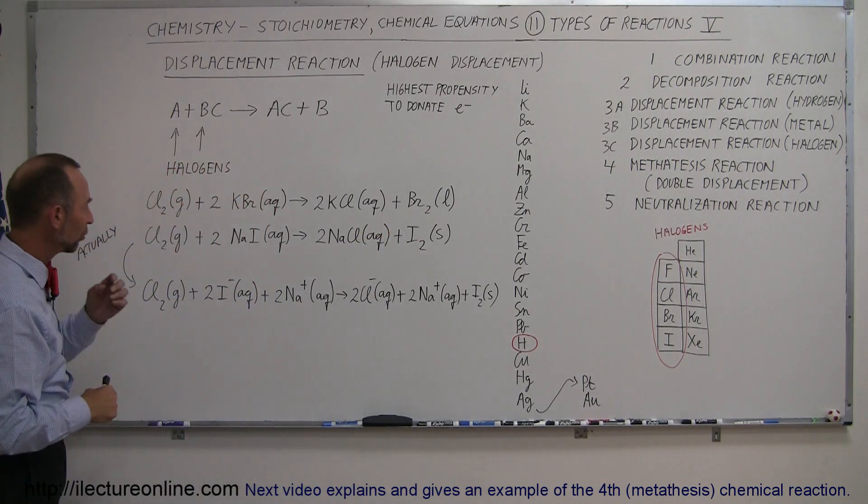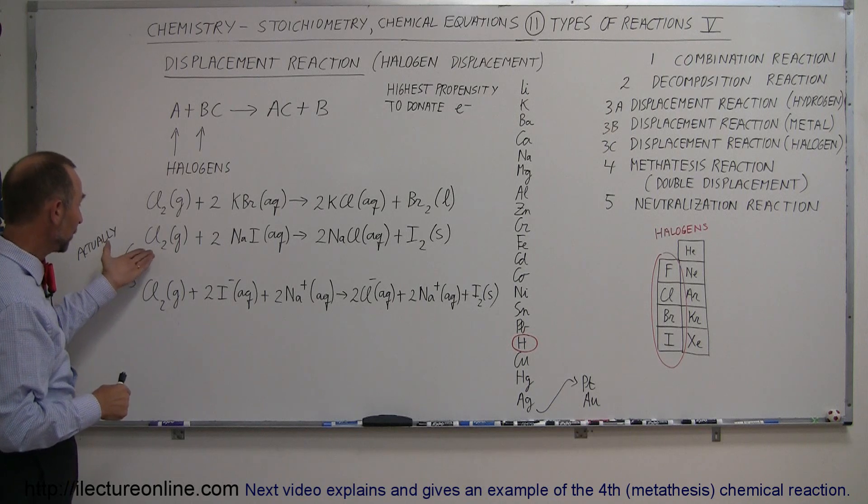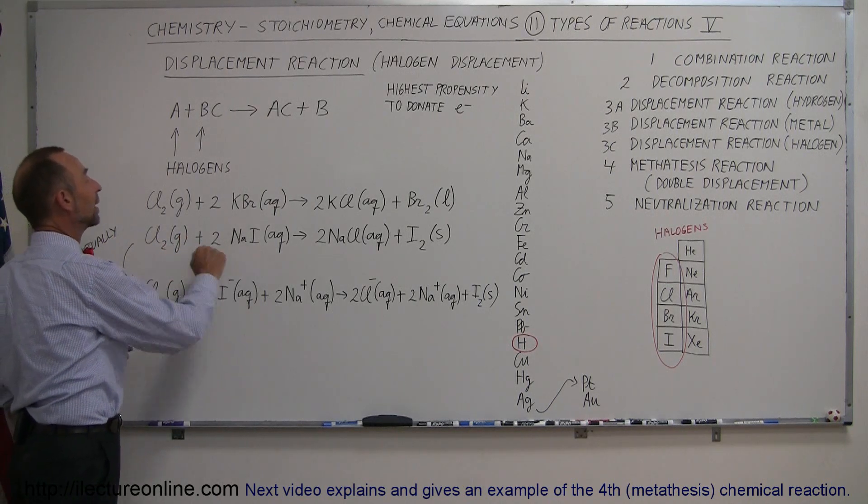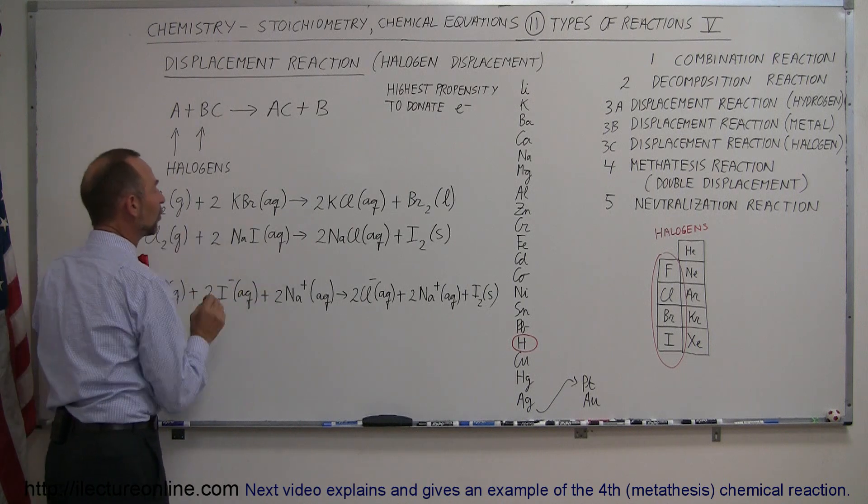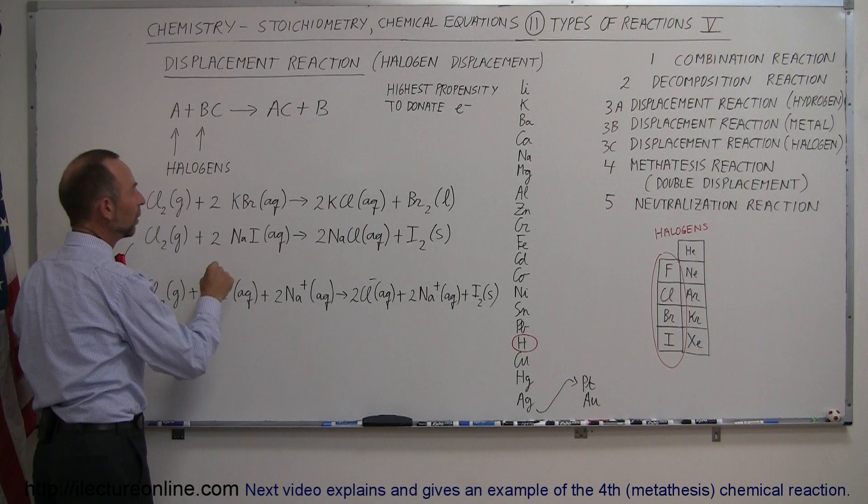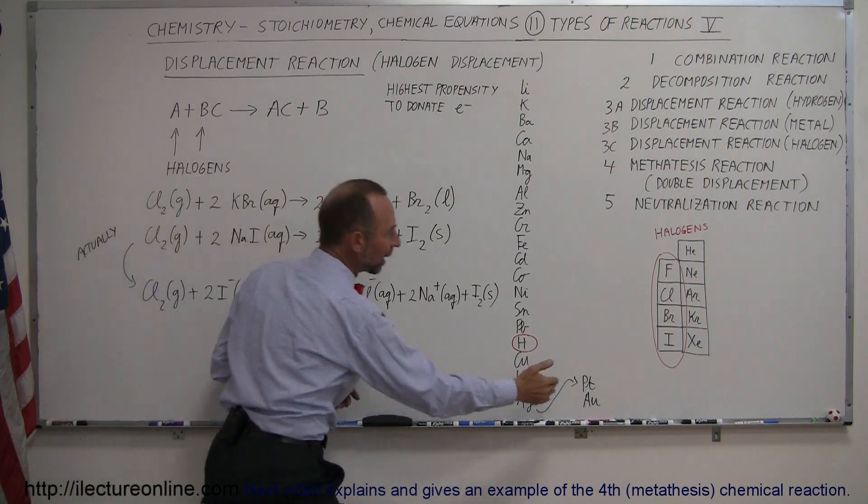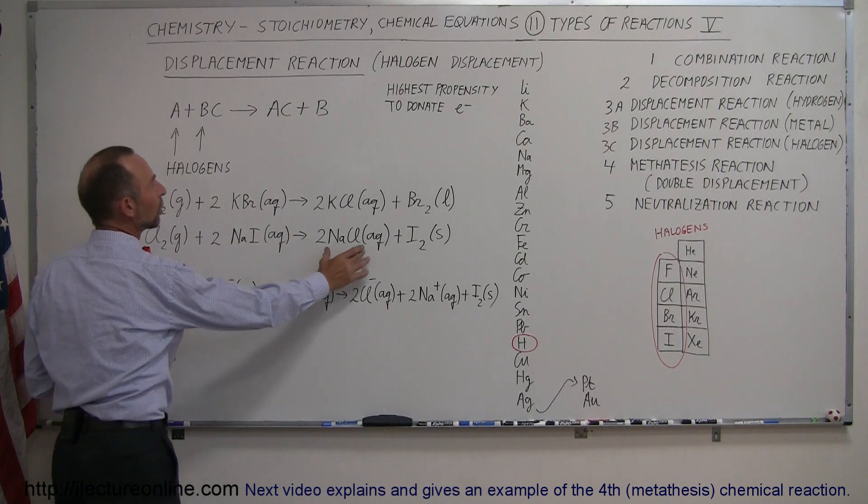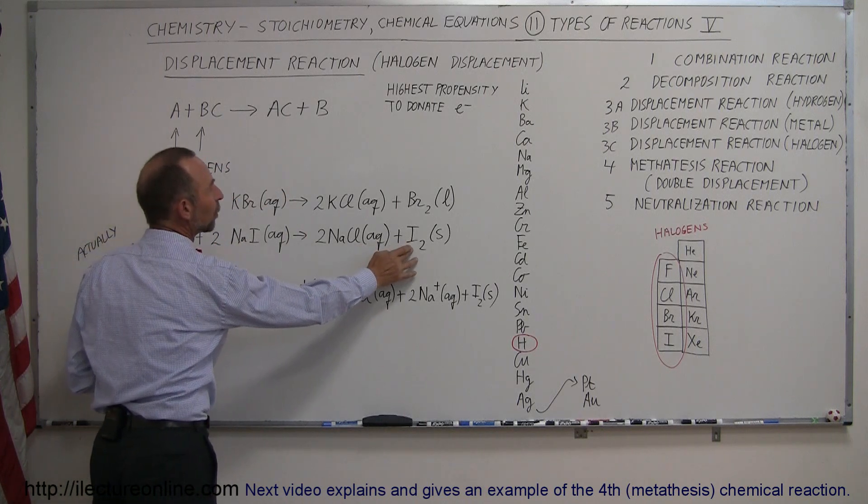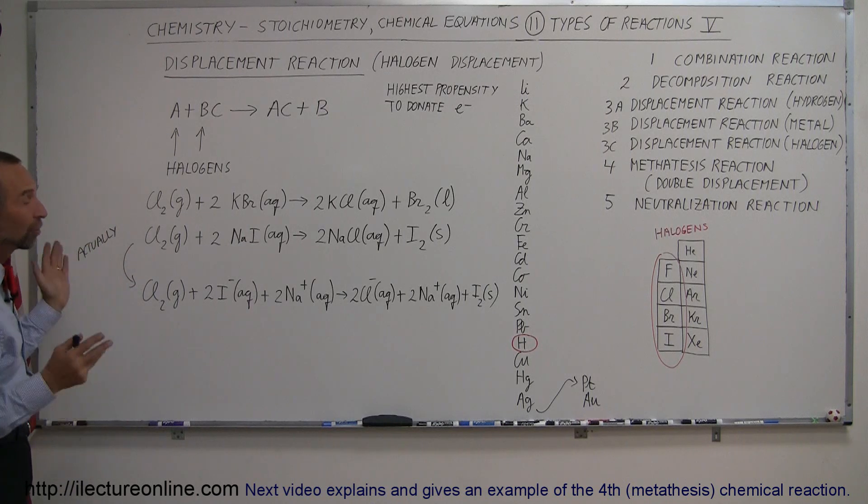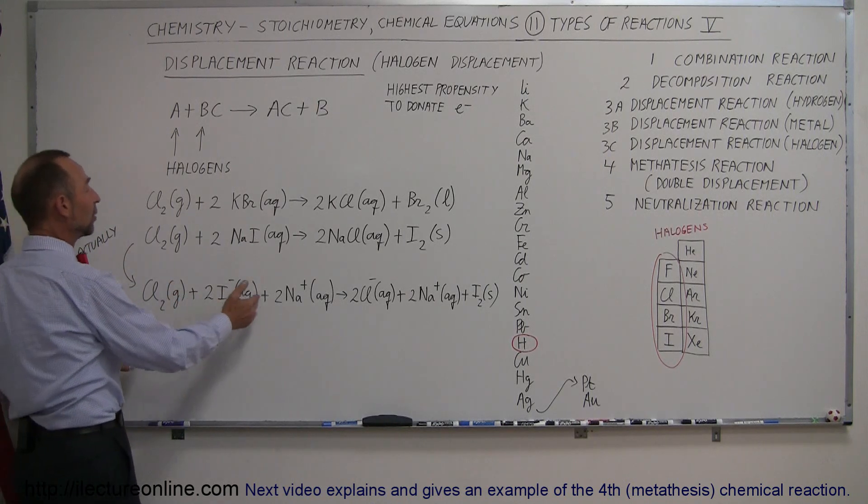Likewise, if we introduce chlorine gas into a solution containing sodium iodide, the chlorine will donate electrons to the iodine, which is lower on the list than chlorine. Sodium and chlorine will remain in the solution, and iodine will precipitate out as a solid. The actual equation: once you place sodium iodide in an aqueous solution, they dissociate into two different ions.